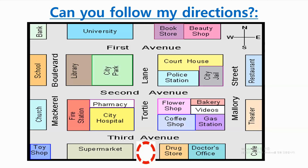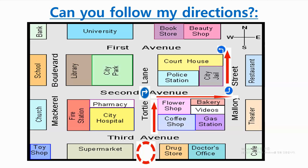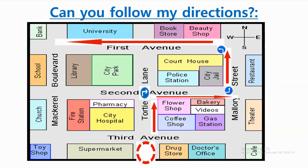So we start at the circle and go straight to Second Avenue. We turn right at the flower shop and go one block to Mallory Street. We take a left and go another block to First Avenue. We go left on First Avenue for two blocks. We go across Mackerel Boulevard. It is across from the bank. This is our final destination: the school.